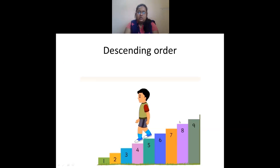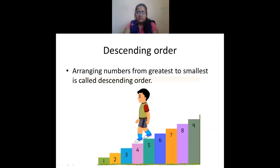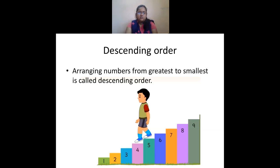Then we have descending order. Now the boy was on 9 and started coming down: 9, 8, 7, 6, 5, 4, 3, 2, 1. From the greatest number, 9, he comes to the smallest number, 1. Arranging numbers from greatest to smallest is called descending order, also known as decreasing order.